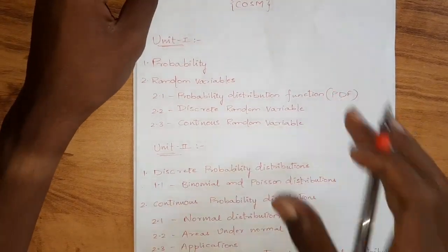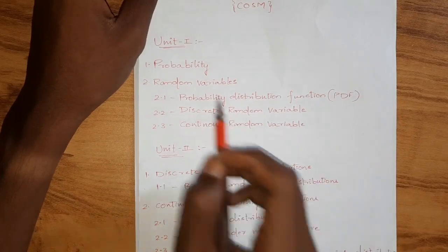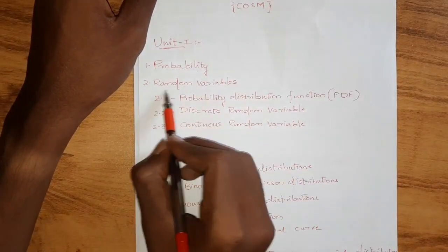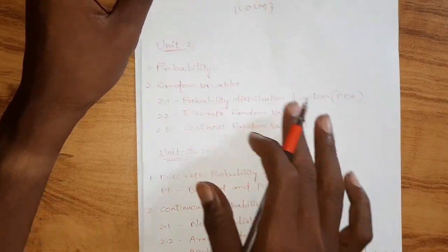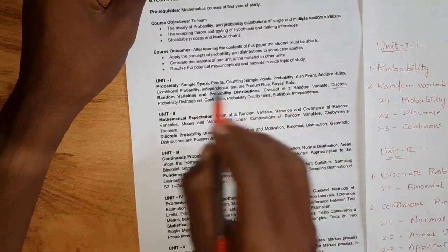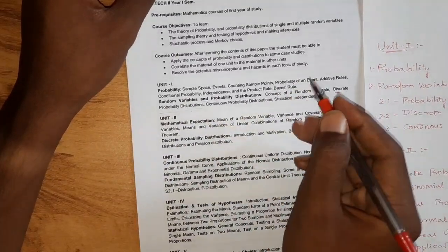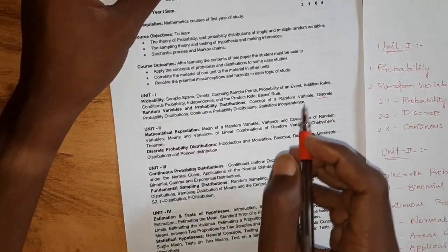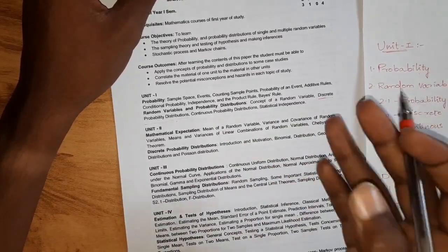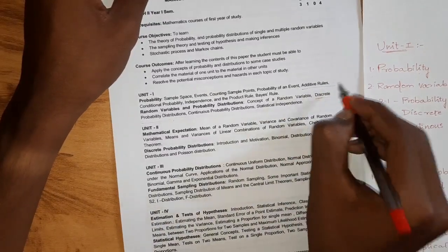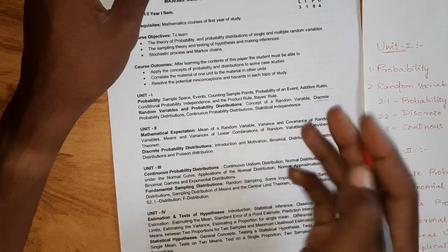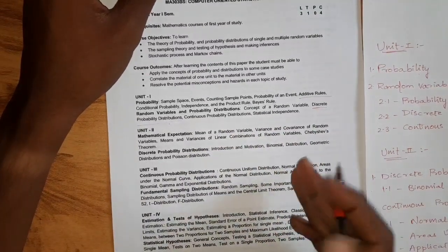If you have a compulsory topic, you will select Random Variables. Probability is a compulsory topic. Topics include: Sample Space, Events, Counting, Sample Points, Probability, etc. In the first unit we cover Venn diagrams and Probability: Addition, Multiplication, Bayes' Theorem. Basic concepts include Additive Rules, Conditional Probability, Independence, Product Rule, Multiplication Theorem, and Bayes' Rule.